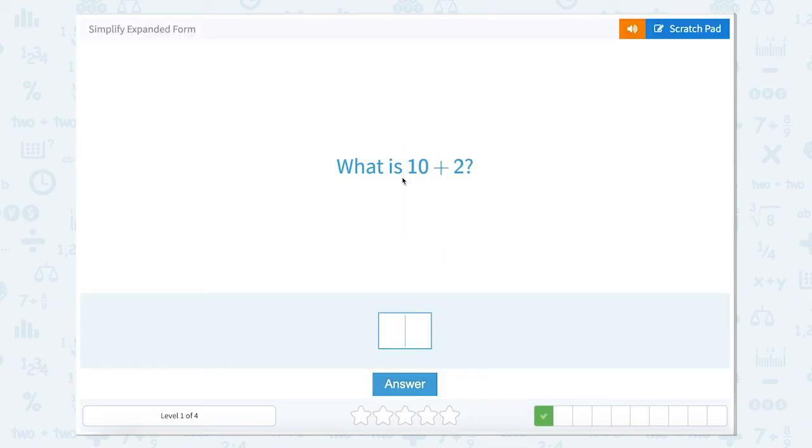What is 10 plus 2? Well, one 10 and two 1s is 12. What is 10 plus 4? Well, again, we have 1 in our 10s and 4 in our 1s, so that makes 14.